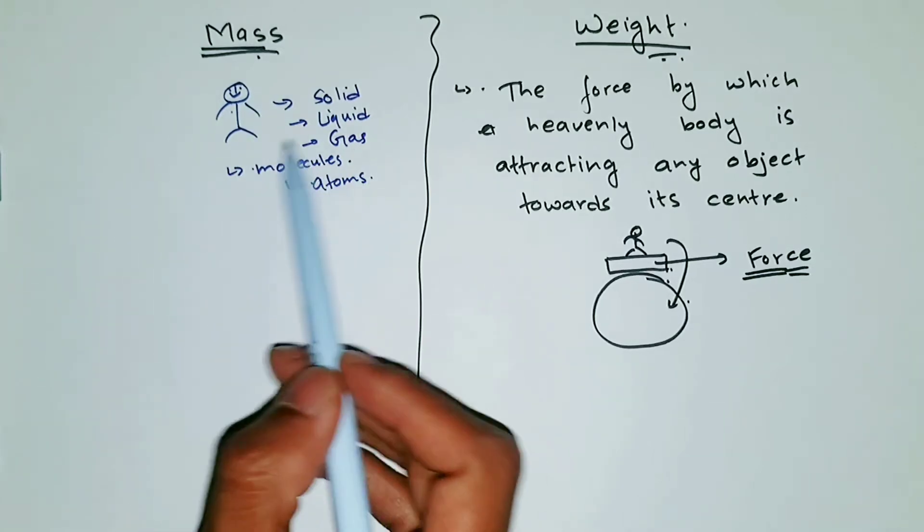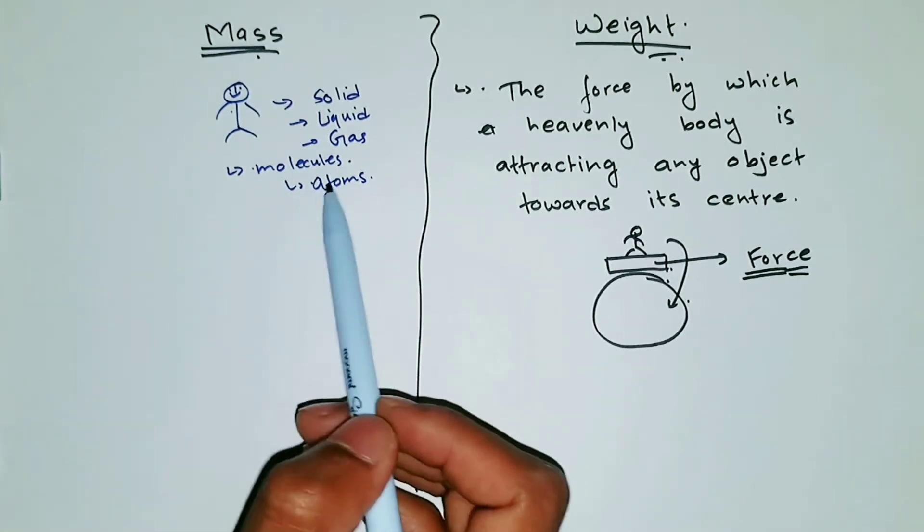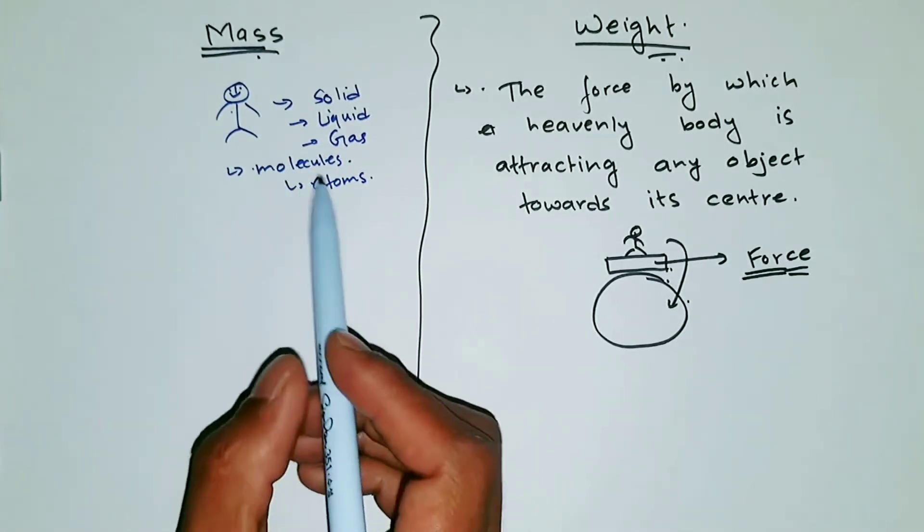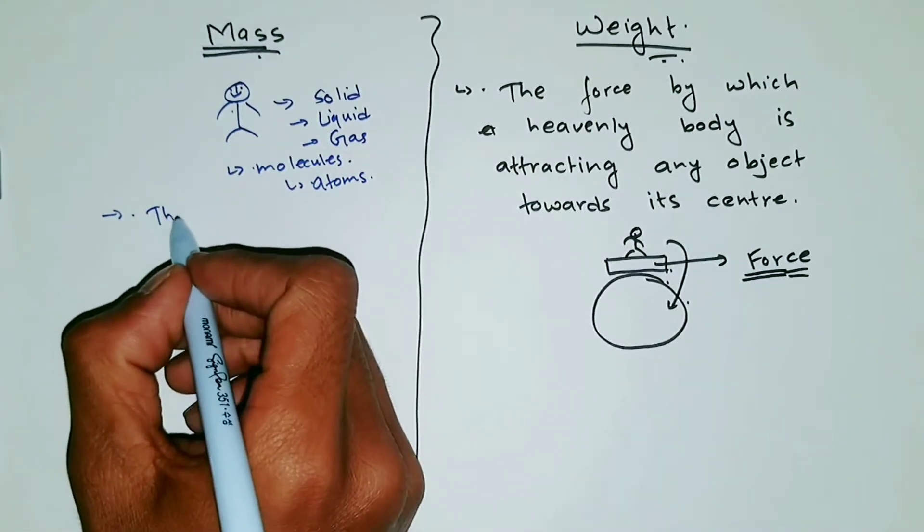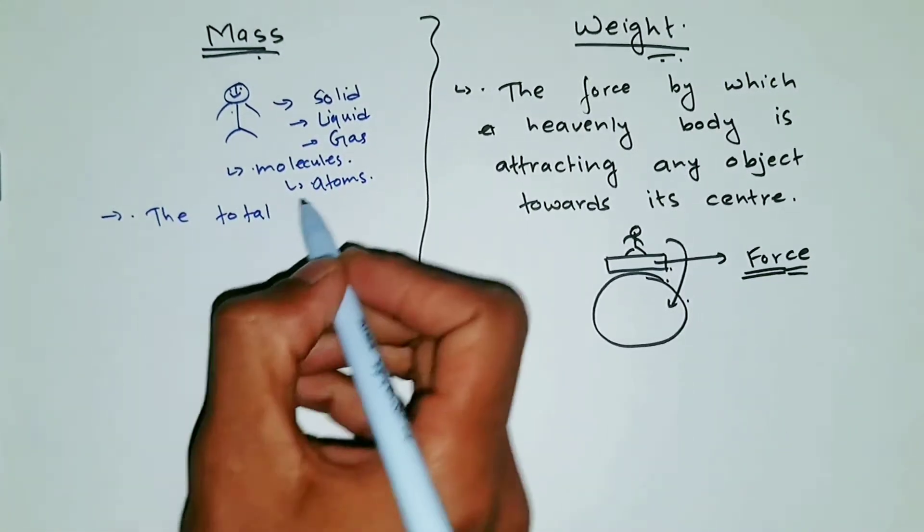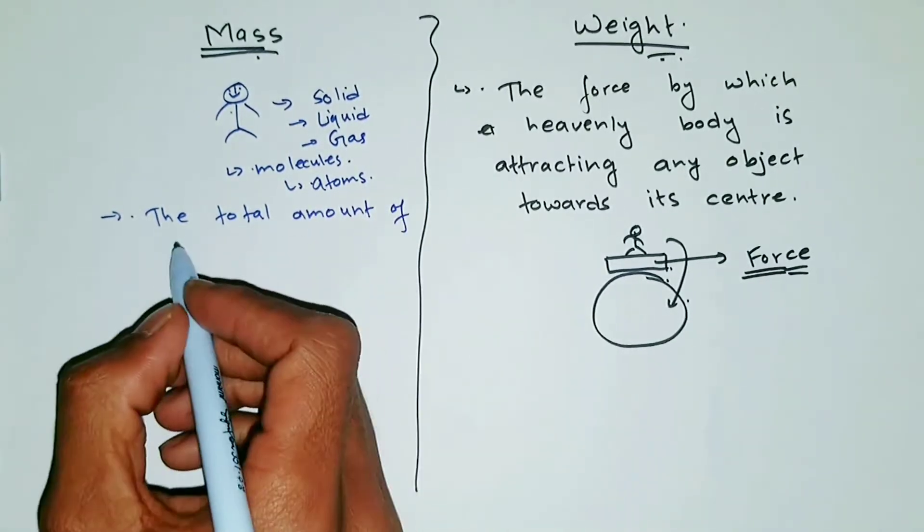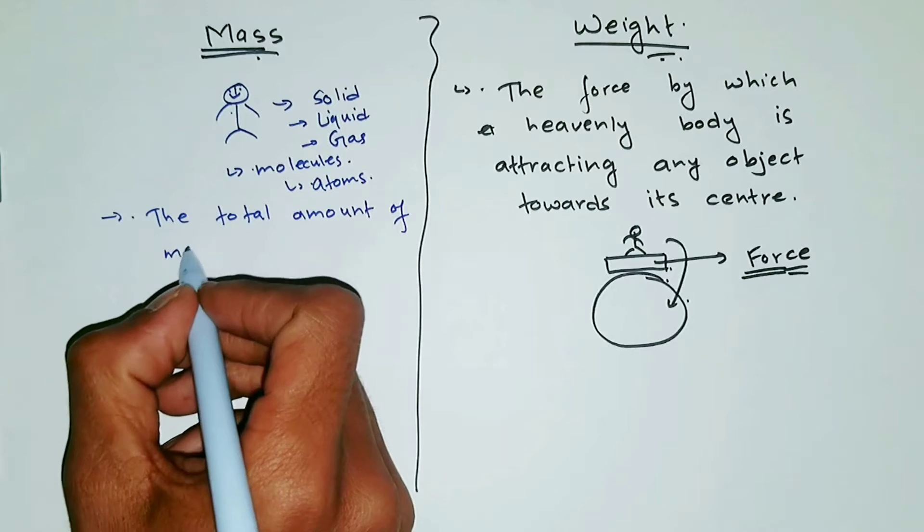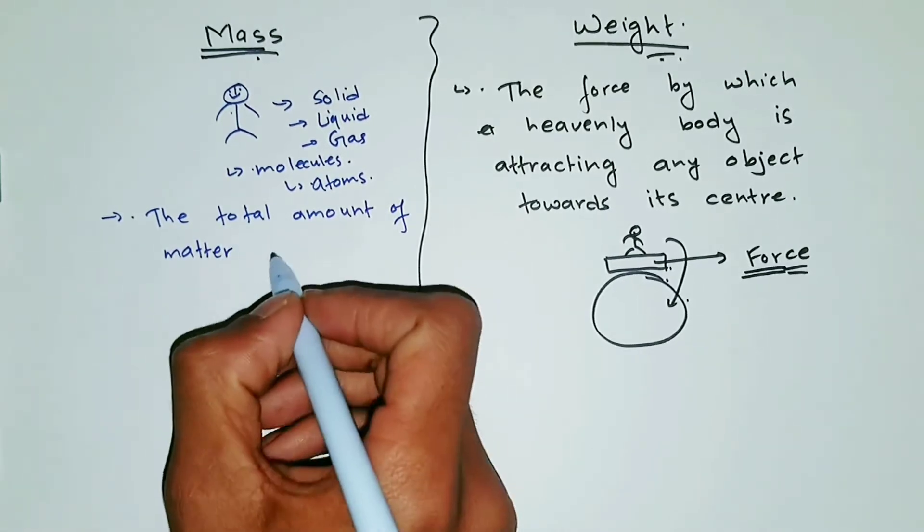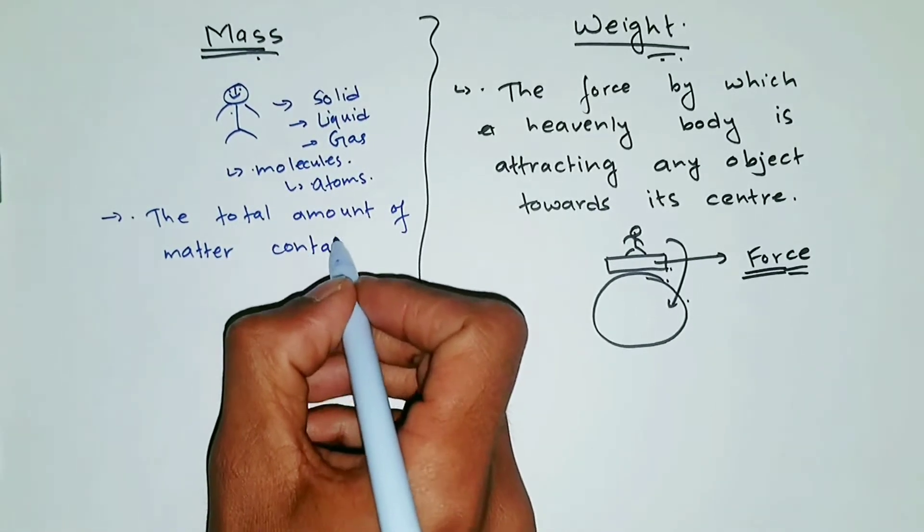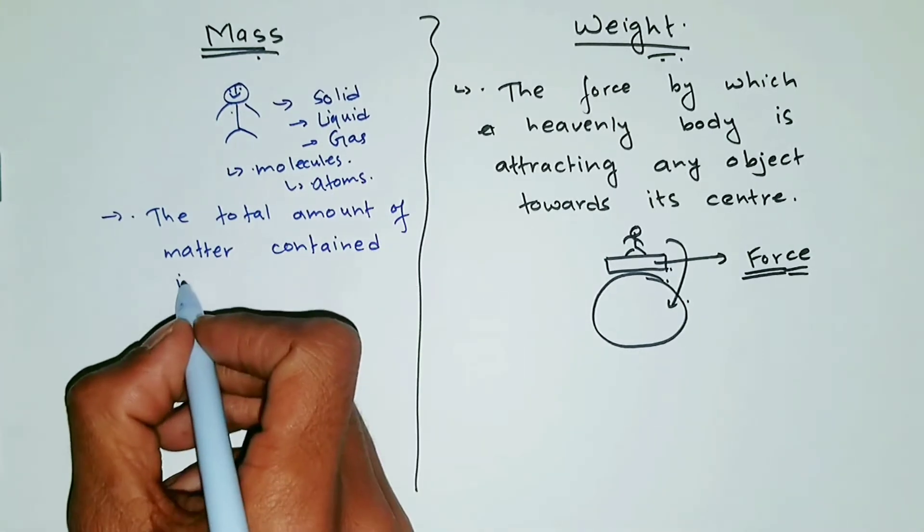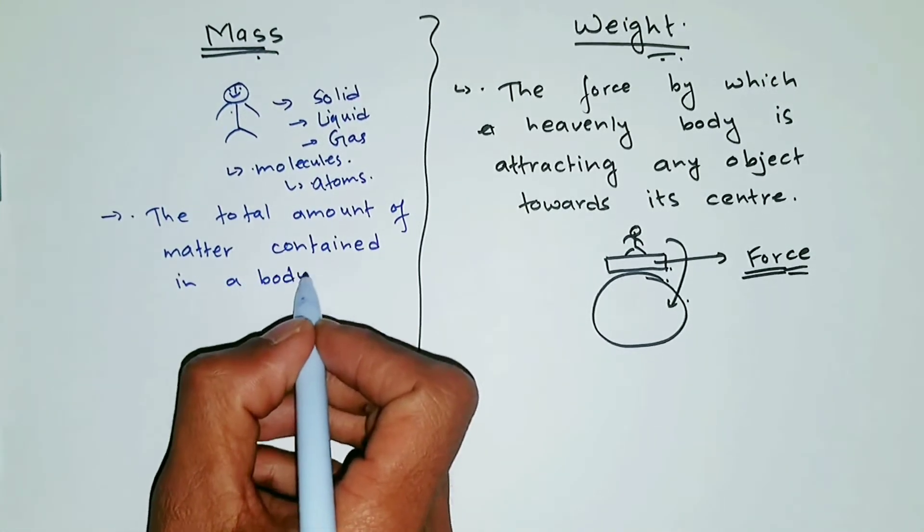So mass is actually how many molecules, or how many atoms are there in your body. So we can write mass as the total amount of matter contained in a body.